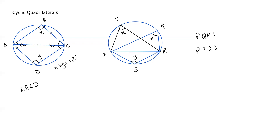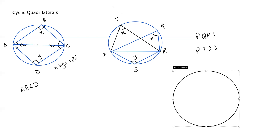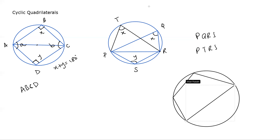The total is 360 degrees. If two of the angles add up to 180, the other two angles will also add up to 180. So if angle W is 100 degrees, then the opposite angle is 80 degrees. If one angle is 70 degrees, the opposite is 110 degrees.